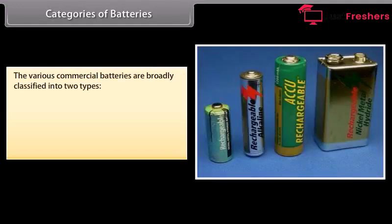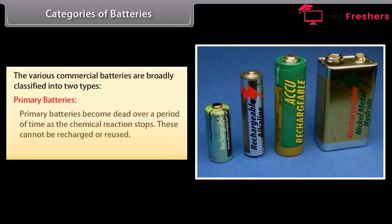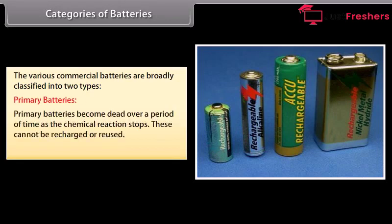Categories of batteries. The various commercial batteries are broadly classified into two types: Primary batteries. Primary batteries become dead over a period of time as the chemical reaction stops. These cannot be recharged or reused. For example, dry cell and mercury cell.